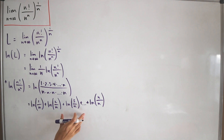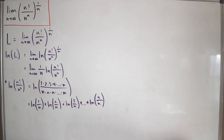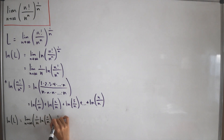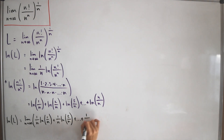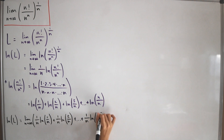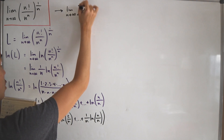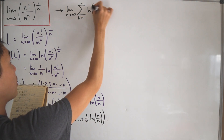This is a sum of everything. Multiplying back by the one over n factor, ln(L) equals the limit as n approaches infinity of one over n times ln(1/n) plus one over n times ln(2/n), continuing on, plus one over n times ln(n/n). Writing this as a partial sum: the limit as n approaches infinity of the sum from k equals 1 to n of ln(k/n) times one over n.